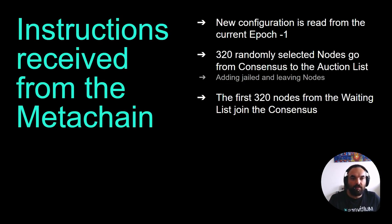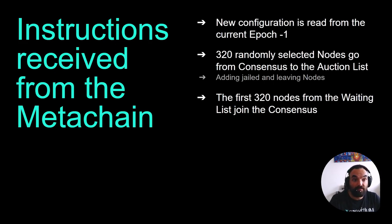Let's continue with epoch start. There are a few key things happening at epoch start. A new configuration is read from the meta chain from epoch minus one. Then, 322 randomly selected nodes are shuffled out from the consensus and moved to the auction list — you can see how everything connects.